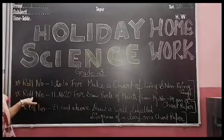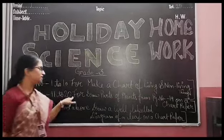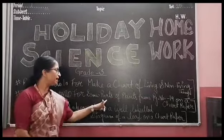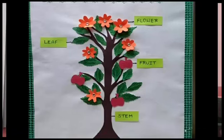For row number 11 to 20, you have to make parts of a plant — a chart of parts of a plant by your own creativity.